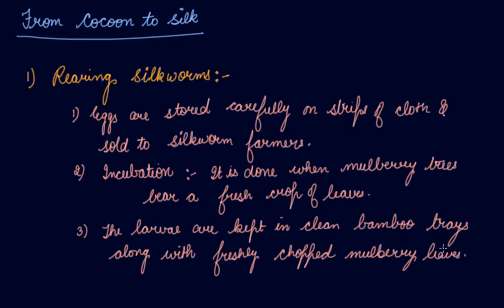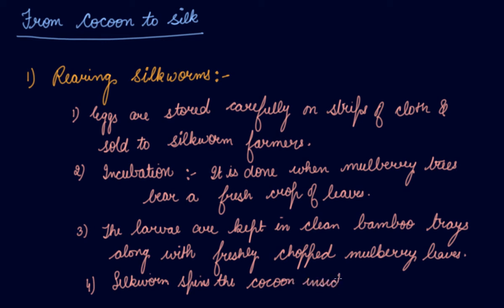After 25–30 days, the caterpillars stop eating and move to a tiny chamber of bamboo in the tray to spin a cocoon. Small racks or twigs may be provided in the tray to which the cocoon gets attached. The caterpillar or silkworm spins the cocoon, inside which the silk moth develops.